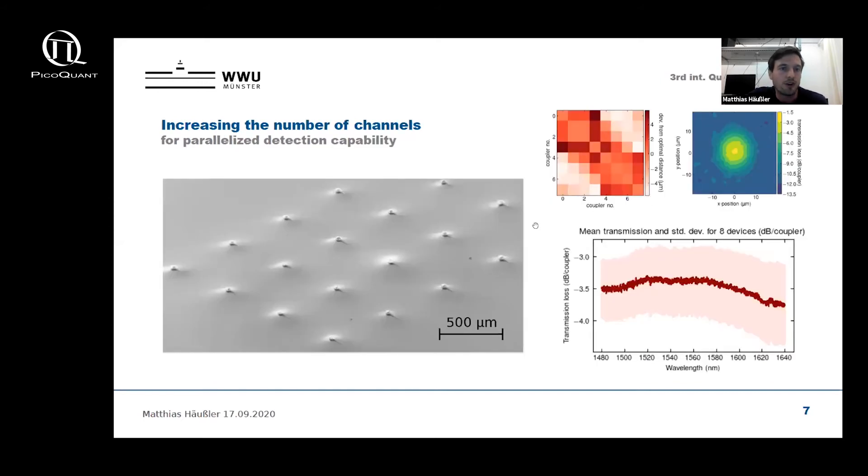In order to scale up to more channels, first we fabricate and characterize matrices of these couplers in order to evaluate the performance reproducibility and alignment tolerance. On the left side you can see an SEM picture of a 4x4 matrix of couplers, where each two neighboring devices are connected via a waveguide to make up in the end eight calibration structures that can be used to characterize the single couplers by sending light into the first and collecting the light from the second one.